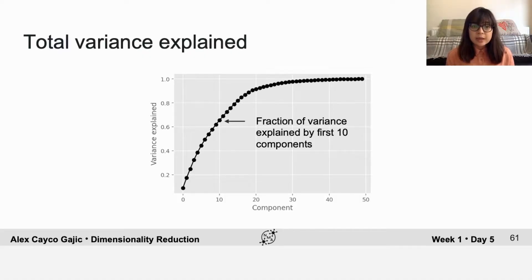Now the point for the 10th component is the fraction of the variance explained by the first 10 components. So I'm summing the eigenvalues for the first through 10th principal components, and I'm normalizing that by the sum of the eigenvalues for all of the components.